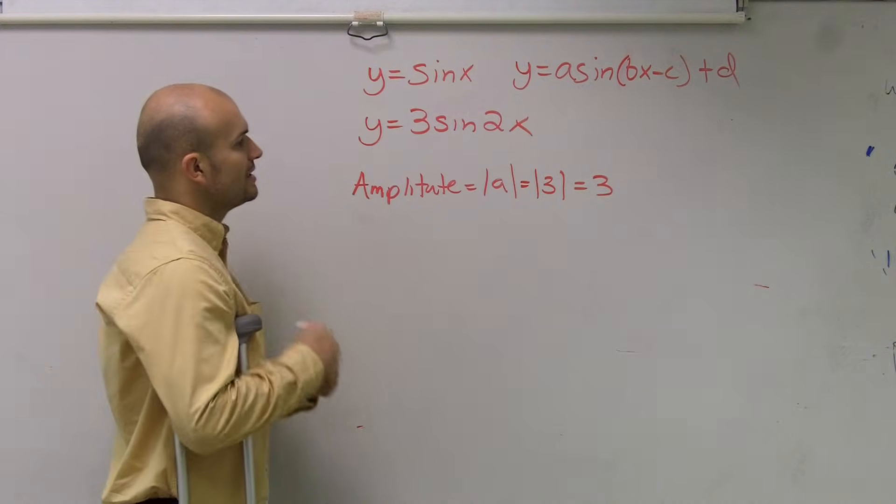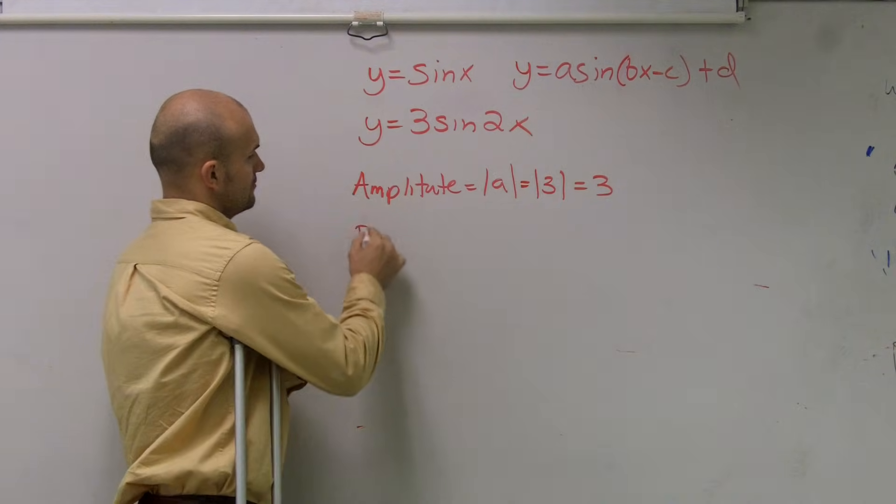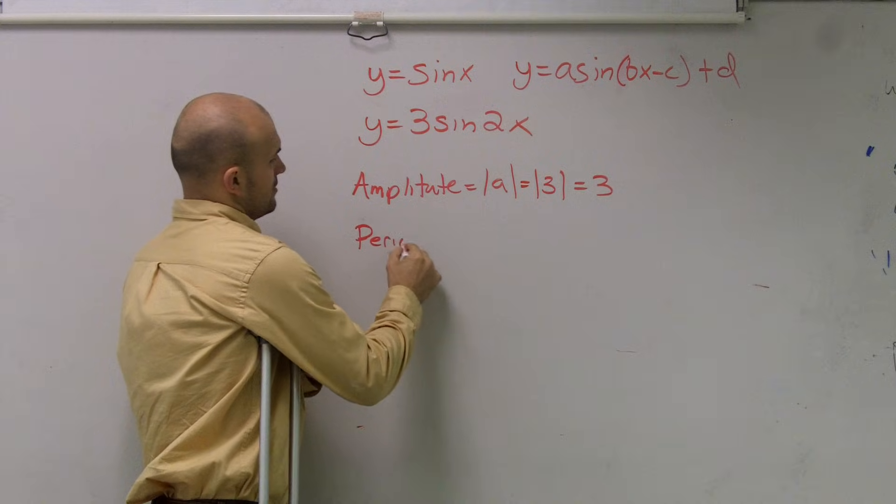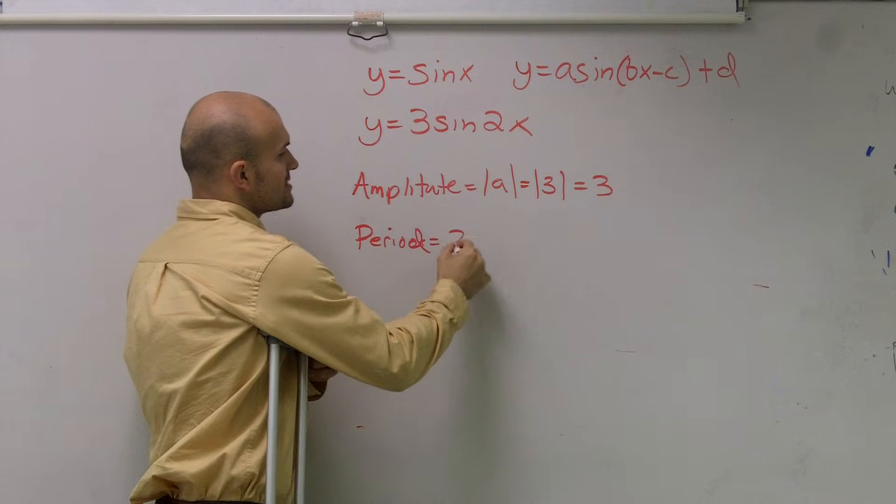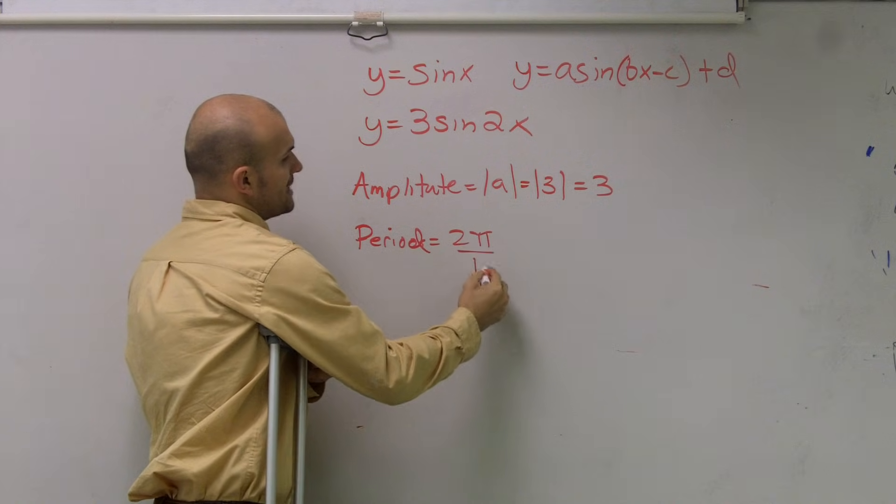The next one, we need to figure out what the period is. So there's actually a formula for your period, and that is 2 pi over B.